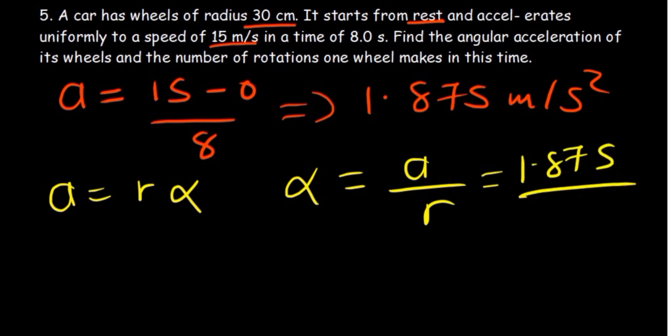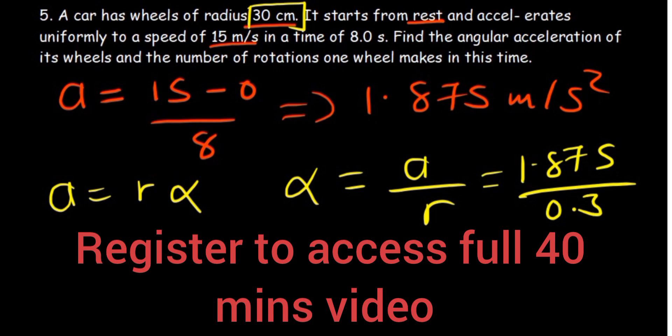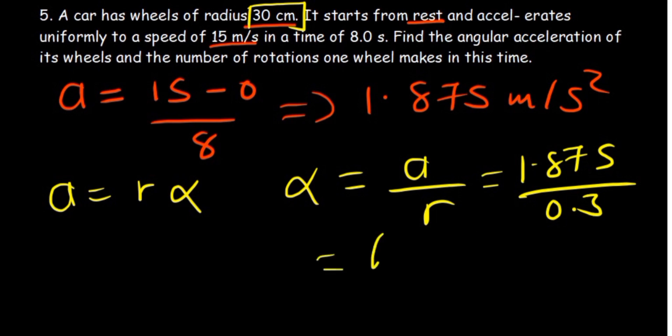Divide by the radius. First of all, it needs to be converted to meters because the radius is in centimeters. So divide by 100, you have 0.3. So you want to divide 1.875 by 0.3, which gives us 6.25.